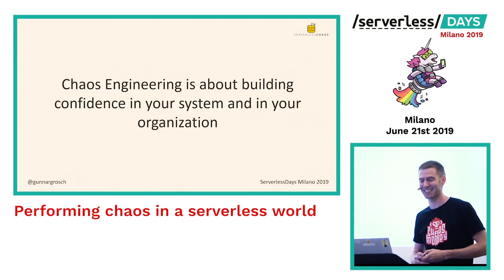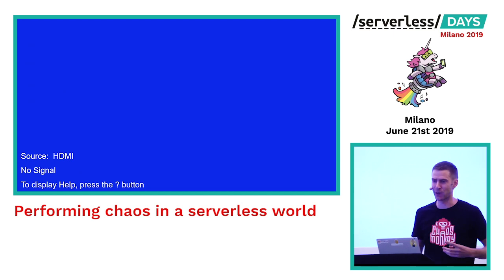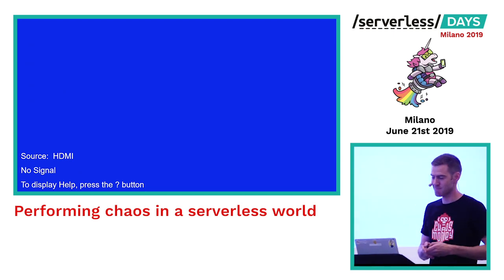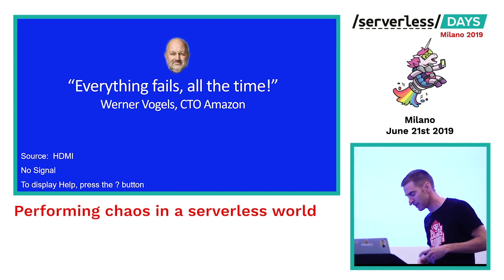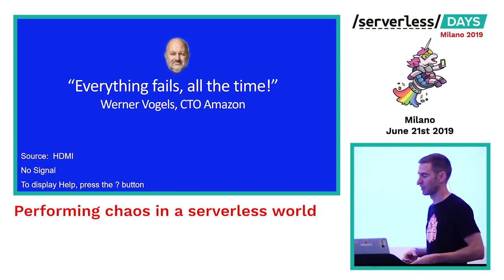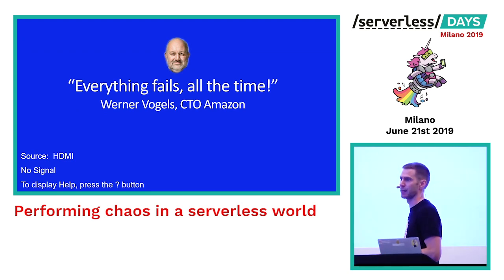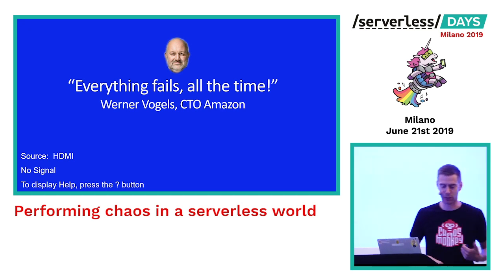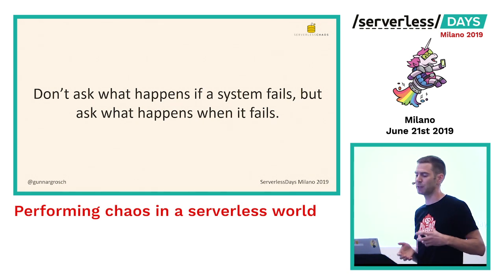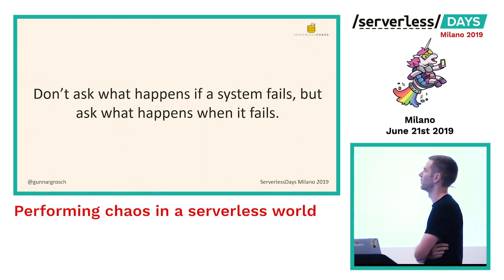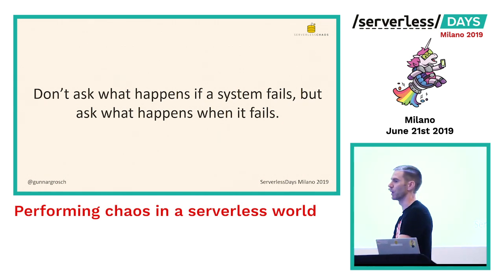So that's the thing — everything fails, all the time. This is the second thing that's in every chaos engineering presentation: the quote from Werner Vogels. We shouldn't ask what happens if a system fails. Instead, we should ask what happens when it fails. Every system will fail eventually.